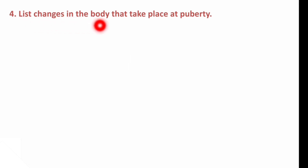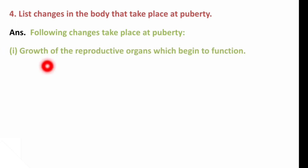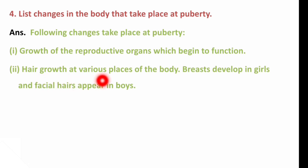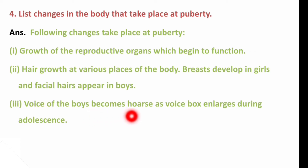Next question: List changes in the body that take place at puberty. Following changes take place at puberty: First, growth of the reproductive organs, which begin to function, bringing reproductive maturity. Second, hair growth at various places of the body; breasts develop in girls and facial hair appears in boys. Third, the voice of boys becomes deep as the voice box enlarges during adolescence.